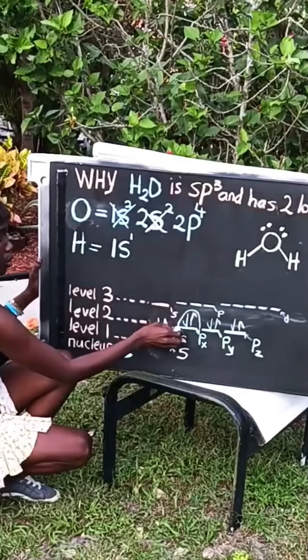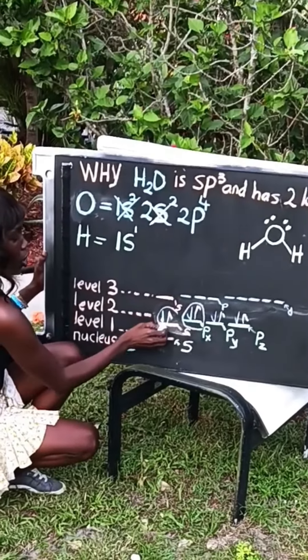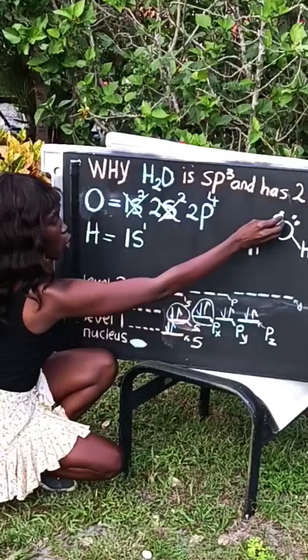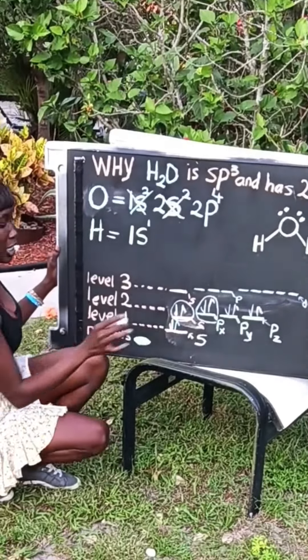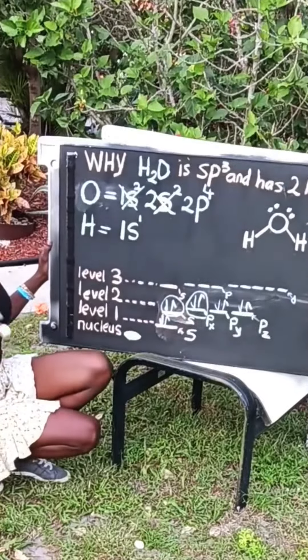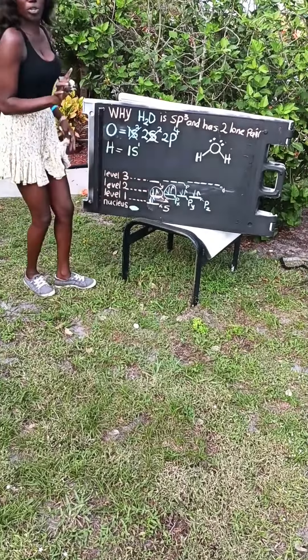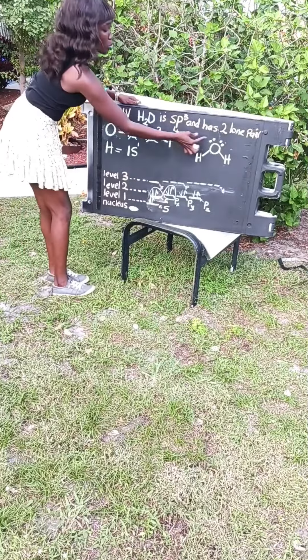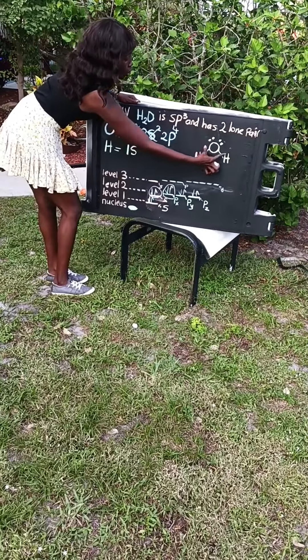These two orbitals are what constitute your lone pairs here. They're not involved in your hybridization, but they're there. They can do bonding. They can do resonance. Lone pair repulsion between lone pairs are stronger. So it's pushing these bonds closer to each other.